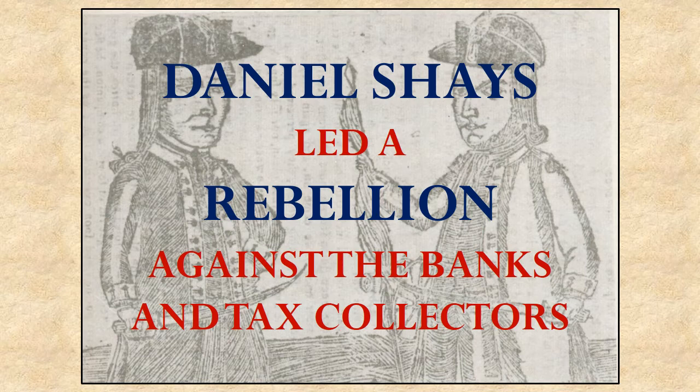When the banks' collectors or the tax collectors showed up trying to get their debts and taxes from these farmers, what Shays' Rebellion organized to do was to capture the bankers and the tax collectors who were trying to collect money from the farmers and throw them in jail instead for trying to foreclose on the farms.